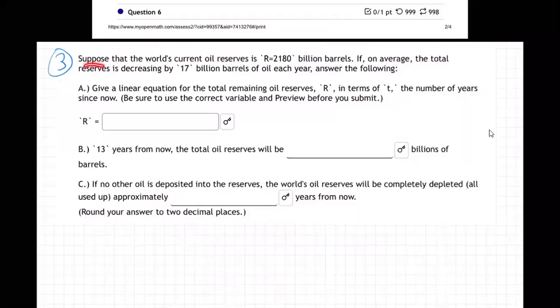It says, suppose that the world's current oil reserves is 2180 billion barrels. If, on average, the total reserves is decreasing by 17 billion barrels of oil each year, answer the following.